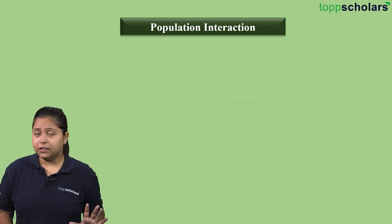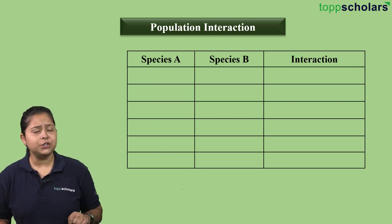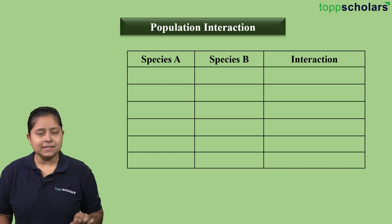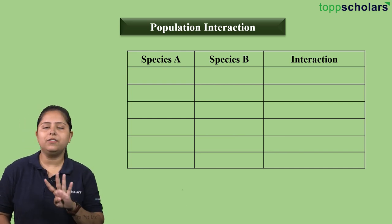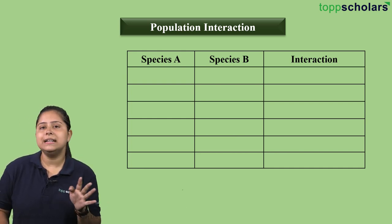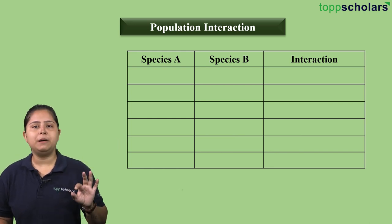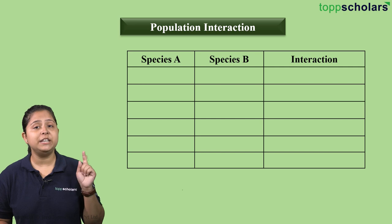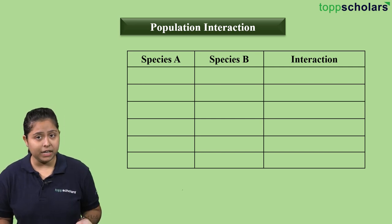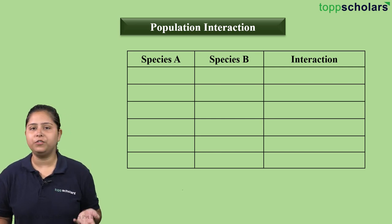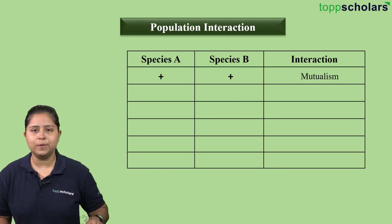Here we have a table which, if you remember, I told you we need to memorize if we want to guarantee four marks in our examination. We will see the concept as well, but for a quick go through, you should remember this table. We have species A in the first column, then species B, and lastly the name of the interaction.